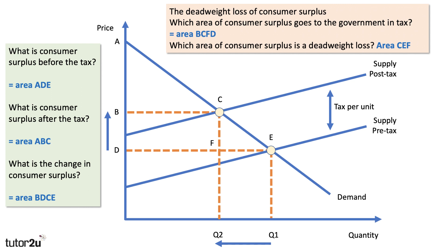Indirect taxes can lead to a deadweight loss of consumer surplus and consumer welfare. Of course, much depends on how the government uses the tax revenue generated. Area B, C, F, D is that revenue — for example, could it be dedicated to a particular purpose which might benefit consumers in some way?